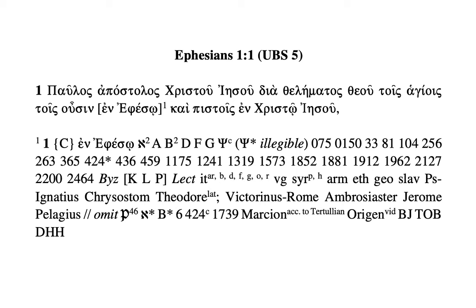How to read the textual apparatus of a Greek New Testament using the UBS 5th edition at Ephesians 1:1. The raised number 1 relates to the textual problem under consideration, and then the bold 1 refers to verse 1.